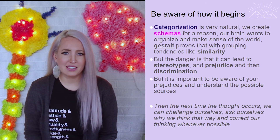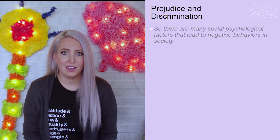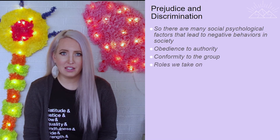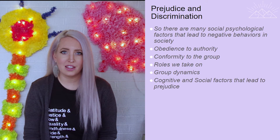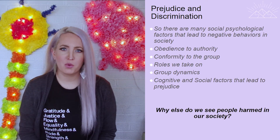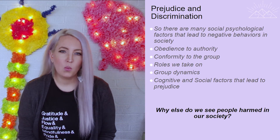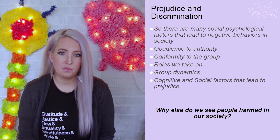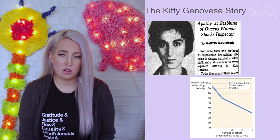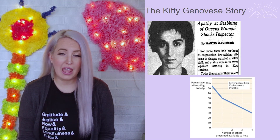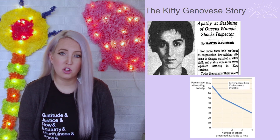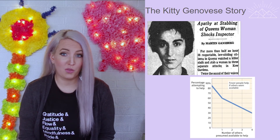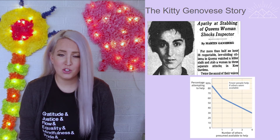Up to this point we've looked at things that contribute to negative behavior in society — from obedience to authority that leads to harming others, conformity, group dynamics, and now cognitive and social factors that lead to prejudice. One of the most famous stories that led to a breakthrough in social psychology is the story of Kitty Genovese — a young woman living in Queens, New York, who was killed in front of 38 witnesses, none of whom came to her aid. This led to the big question: why did nobody help her?